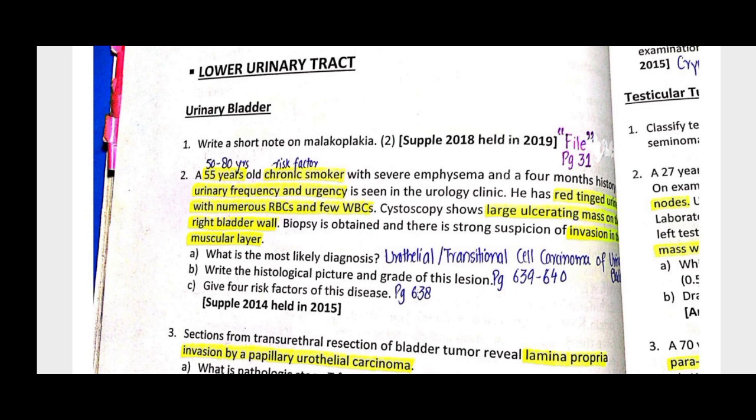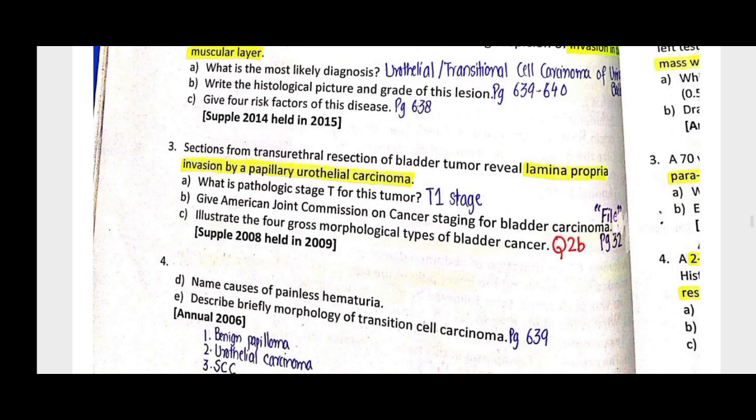Pathological staging: if the tumor is within the lamina propria it is T1; invasion into the muscularis propria is T2; perivesical soft tissue involvement is T3; and spread into extravesical structures is T4.